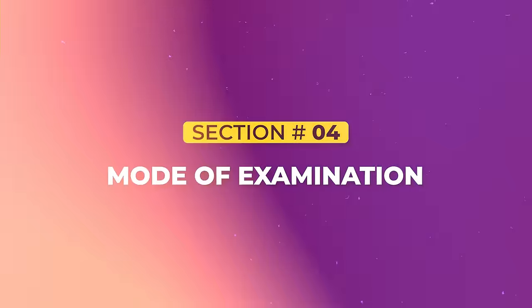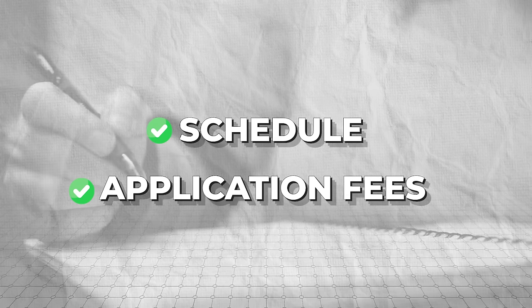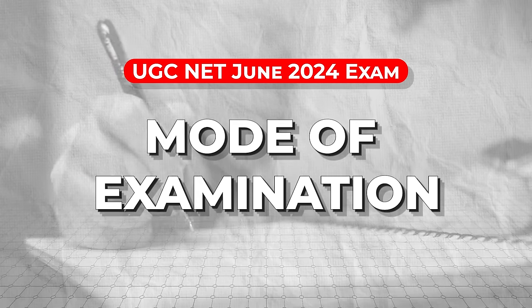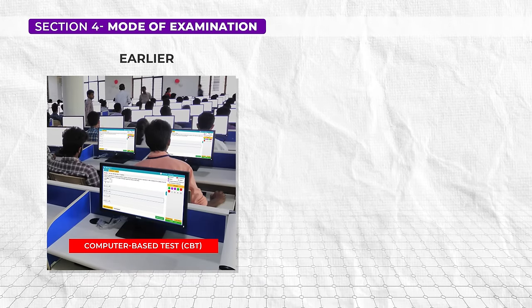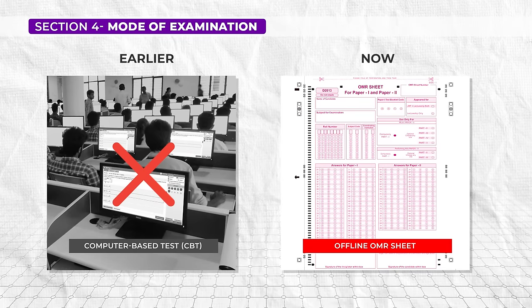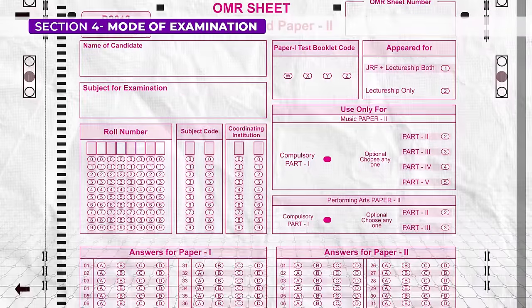Section 4: Mode of Examination. Now let us jump to the most important section — the major change declared by UGC for the UGC NET June 2024 examination: a change in the mode of examination. Given that most students were worried about computer usage issues and systems breaking down mid-exam, UGC has made it simple. Say goodbye to the computer-based test (CBT) format, because the UGC NET exam is going old school with offline OMR sheets. After running with CBT since 2019, it's back to the good old OMR format, just like before 2018.